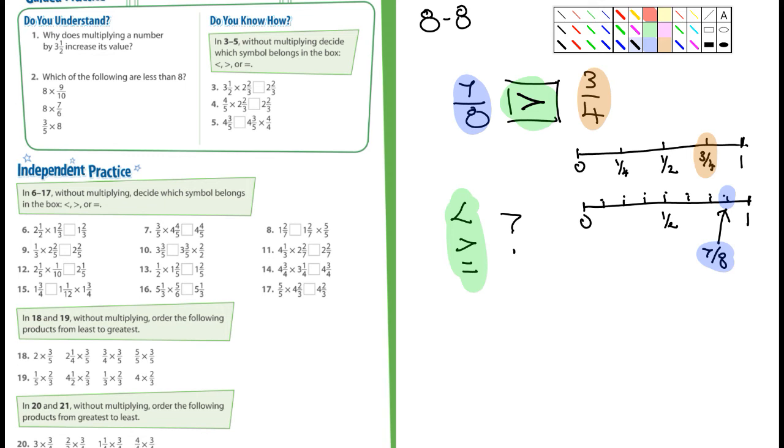Now if the fraction happens to look like this, let's say 12 over 10, any time the numerator, what's on top, is larger than the denominator, what's on bottom, then it's greater than 1. That's representing something larger than 1.